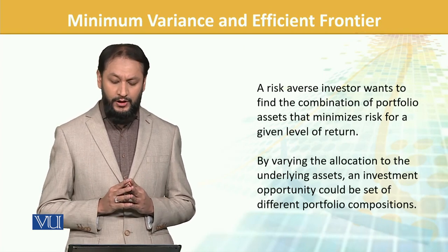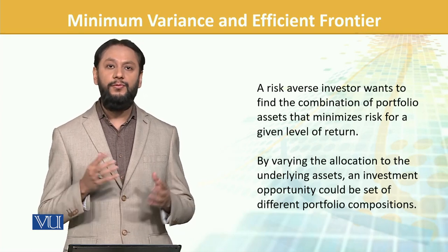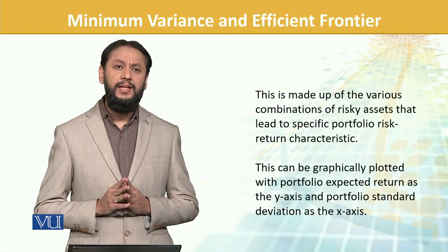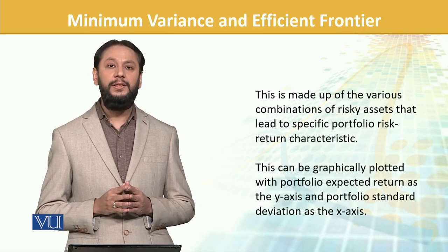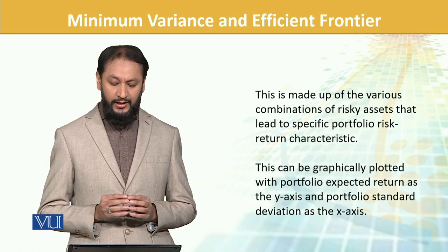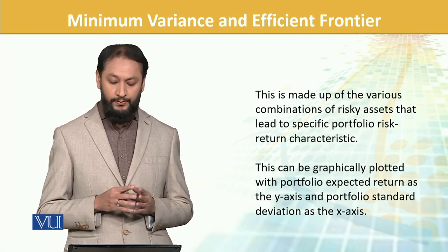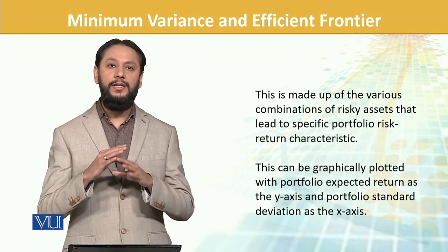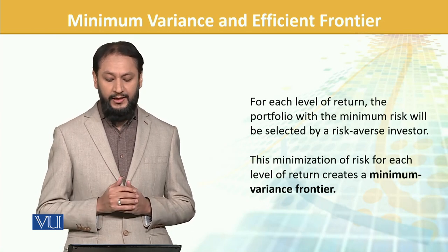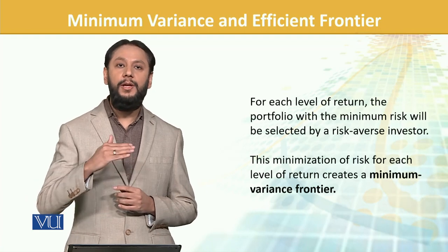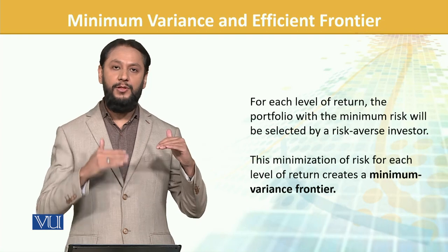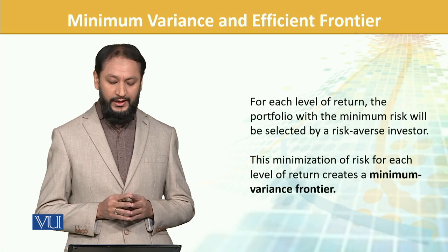By varying the allocation to underlying assets, the investment opportunity set can be formed from different portfolio combinations. To decide which combination suits best, we look at various combinations of risky assets that lead to specific portfolio risk-return characteristics. This can be graphically plotted with portfolio expected return on the y-axis and portfolio standard deviation on the x-axis. For each level of return, the portfolio with minimum risk will be selected by a risk-averse investor.